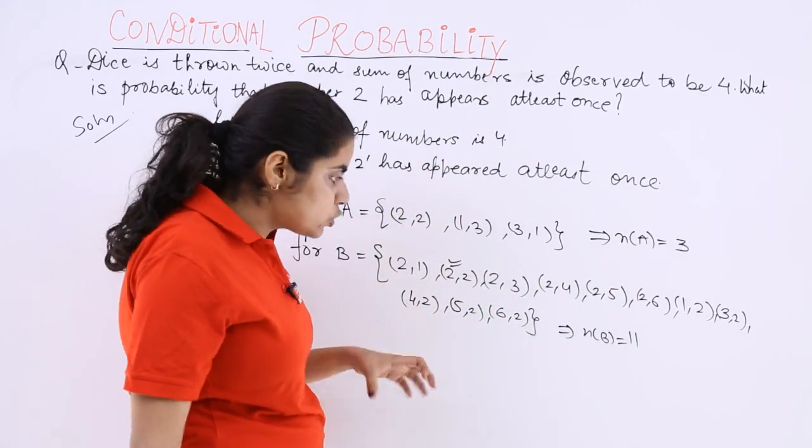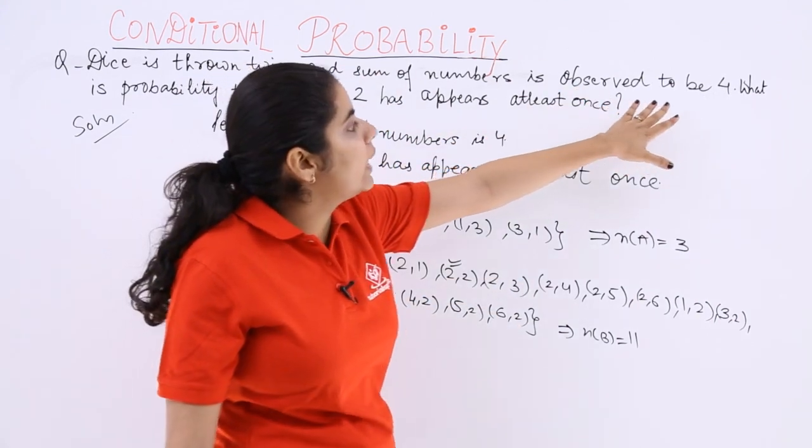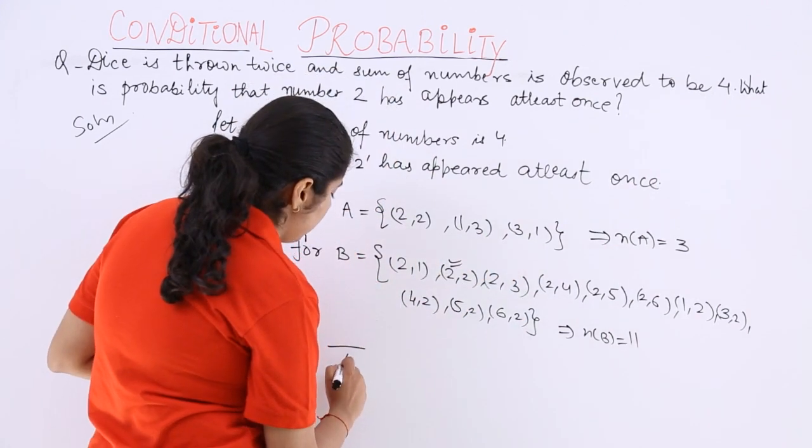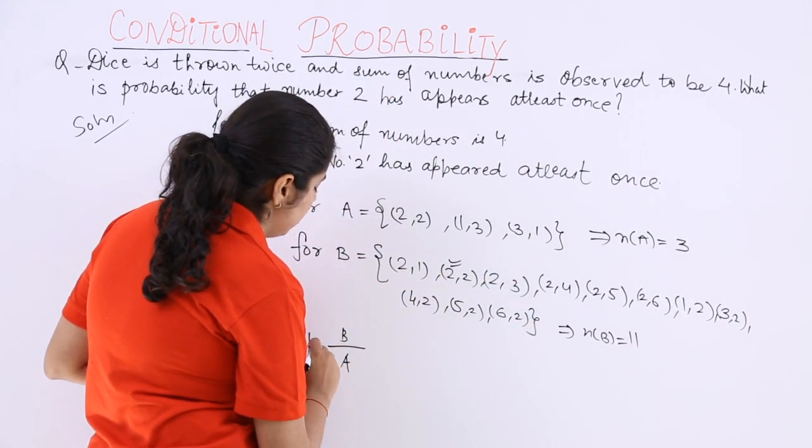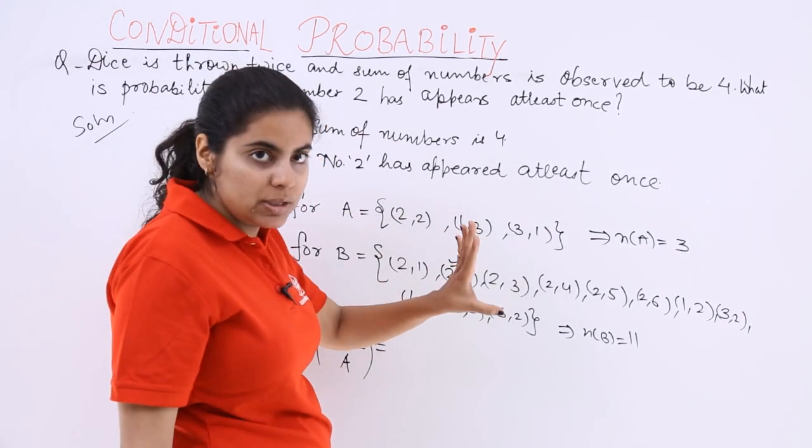Now we are supposed to find the conditional probability. See we were already known that it has been observed that it is 4. Means the event A had already occurred. We are supposed to find out probability of B upon A.